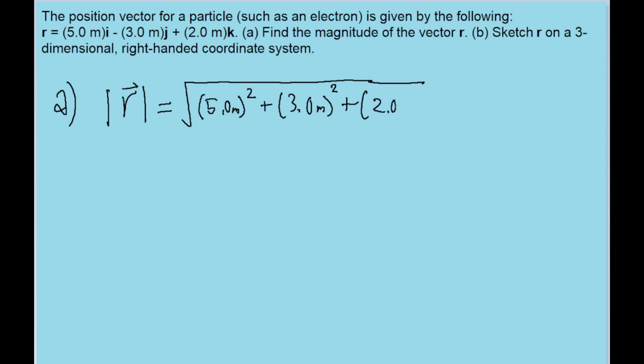And then finally plus 2.0 meters squared. And if we put this into our calculator, then we find a magnitude of about 6.2 meters. So that is the magnitude of the vector.